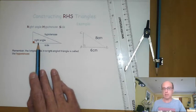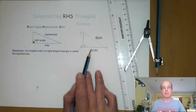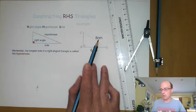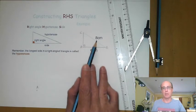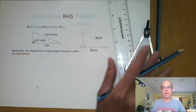The example that we're going to look at is this one here, we're going to have triangle ABC. The base length is 6 centimeters, the hypotenuse opposite that right angle is 8 centimeters long. We're going to need a ruler and we're going to need a compass.